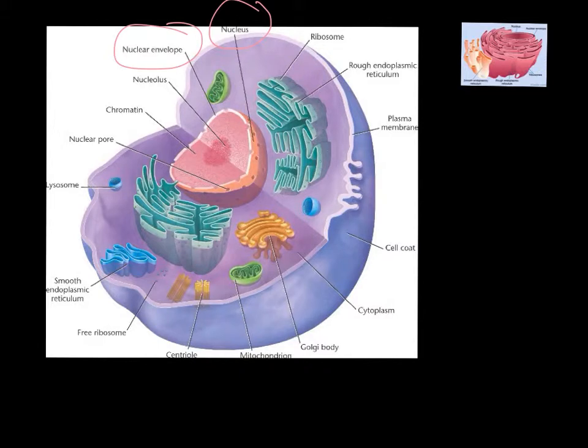The small little dots right here are known as ribosomes, which are located on the endoplasmic reticulum right here, which makes it look rough, also known as the rough ER. They can also be floating around attached to nothing.